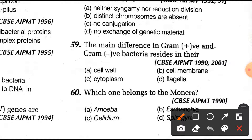Question number 59: the main difference between gram positive and gram negative bacteria resides in their cell wall. If bacteria are unable to retain the color, then they are gram negative bacteria. Question number 60: which one belongs to Monera? This is the easiest question — it belongs to kingdom Monera.